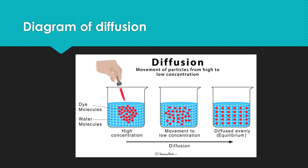This is the diagram of diffusion. In this diagram we can see that the molecules move from higher concentration to lower concentration. As they move, they go from higher to lower concentration, and in the last part we can see that they reach the state of equilibrium. First there are dye molecules moving from higher concentration to lower concentration, then movement continues until equilibrium is reached.